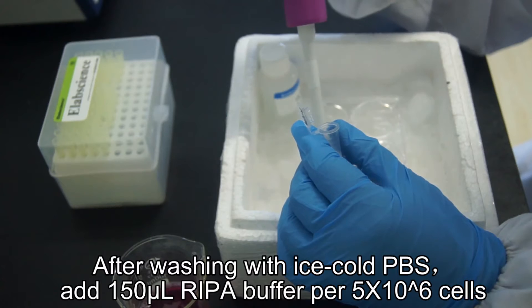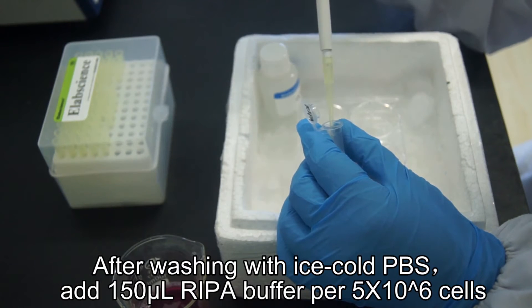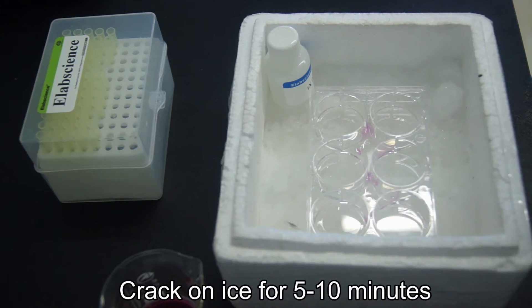Add 150 microliters of prepared lysis buffer for every 5 million cells. Then crack the mixture on ice for 5 to 10 minutes and mix with a scraper.